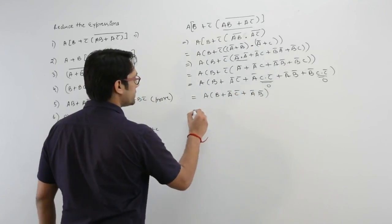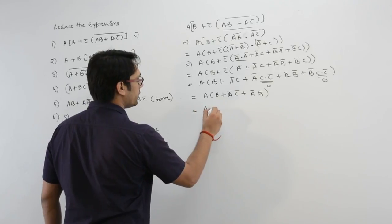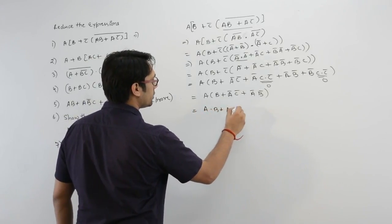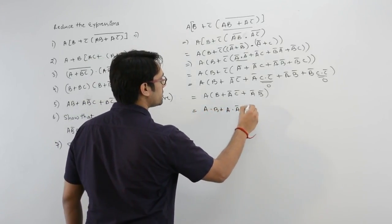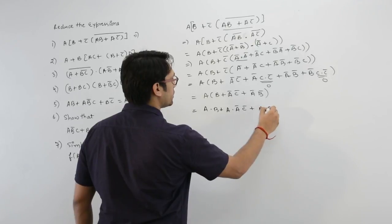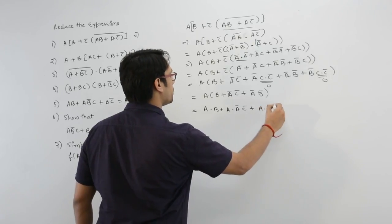This can be written as a·b plus a·a'c' plus a·a'b'.